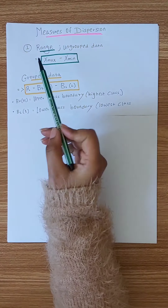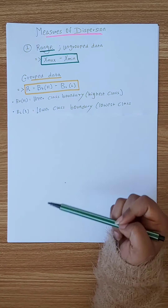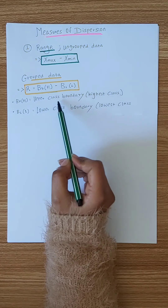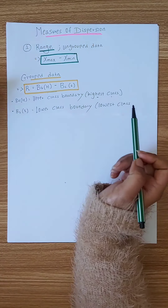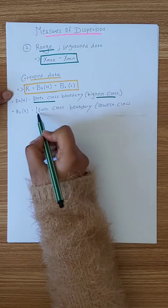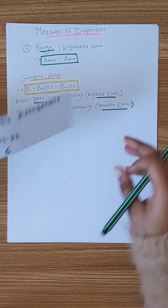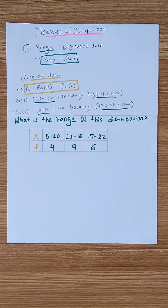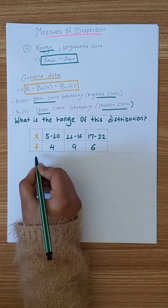This is the measure of dispersion. For ungrouped data, the range is x-maximum minus x-minimum. For grouped data, the range is the upper class boundary of the highest class minus the lower class boundary of the lowest class. This is the range of distribution.